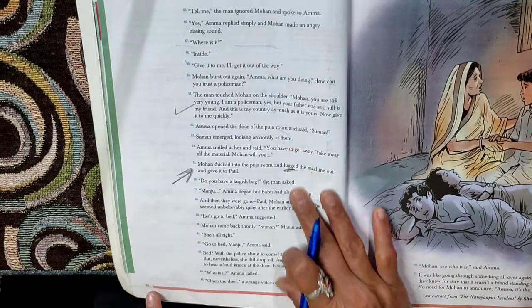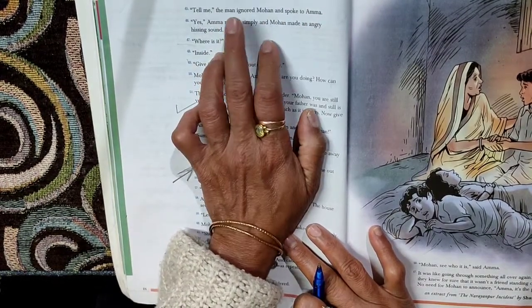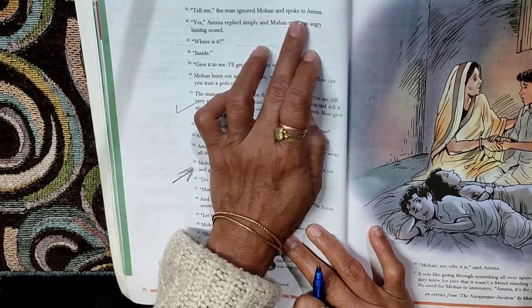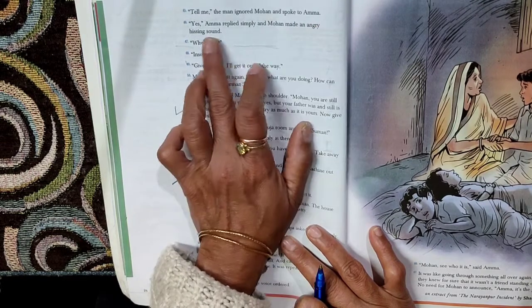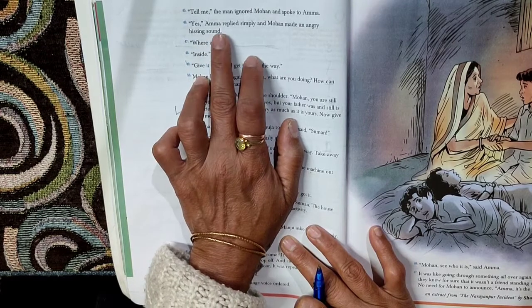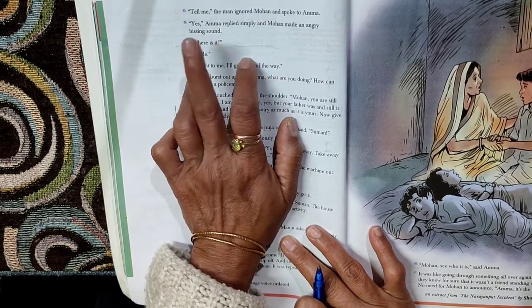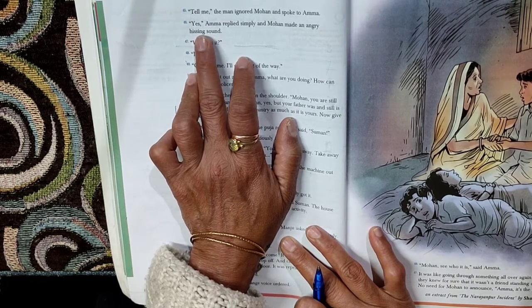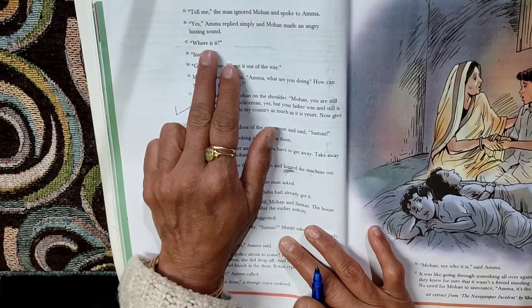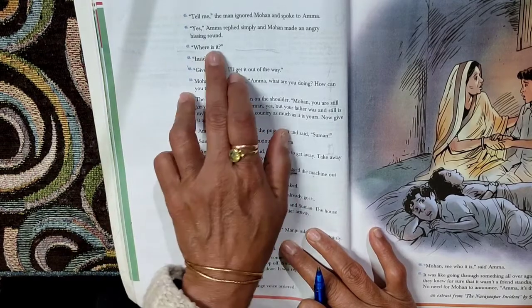Next page, page number 18. Tell me, the man ignored Mohan and spoke to Amma. So sub-inspector Patel now doesn't listen to Mohan because he has denied, and he goes on to speaking to Amma. Yes, Amma replied simply and Mohan made an angry hissing sound. So Amma is confessing here. She says yes, we do have the cyclostyling machine. Mohan is getting angry, he is making angry hissing sound, telling Amma why are you telling this to sub-inspector Patel?